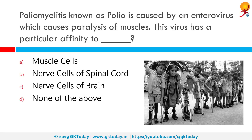Poliomyelitis, also known as polio, is caused by an enterovirus which causes paralysis of muscles. This virus has a particular affinity to the nerve cells of the spinal cord. Poliomyelitis, often known as polio or infantile paralysis, is an infectious disease caused by the poliovirus. In about 0.5 percent of cases, there is muscle weakness resulting in an inability to move.